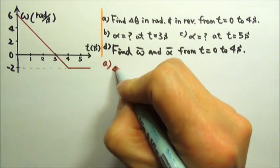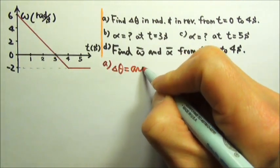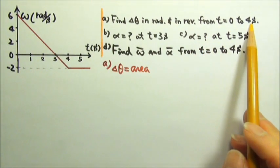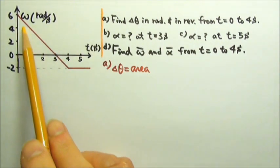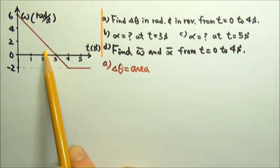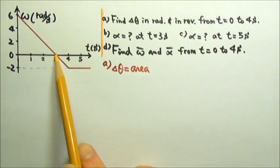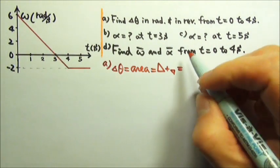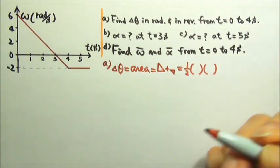For Part A, the angular displacement is the area of this graph. We only want the displacement from zero to four. The area above the zero line gives us positive displacement, and the area below the zero line gives us negative displacement. So we have to add these two triangles together. The area of a triangle is one-half height times base.